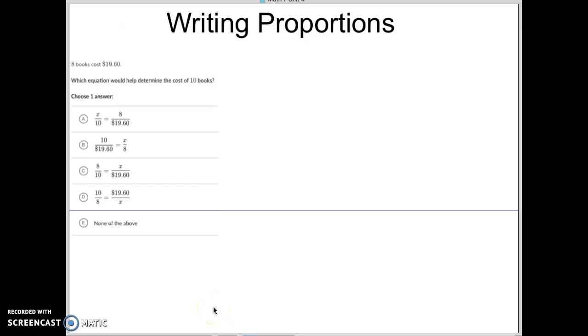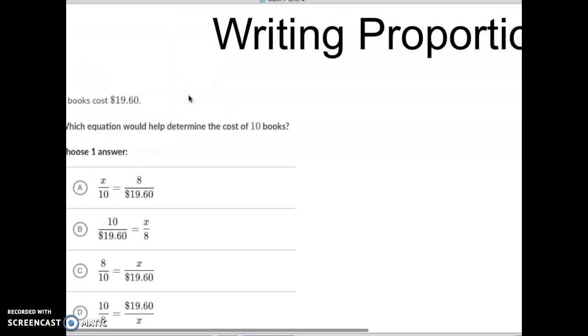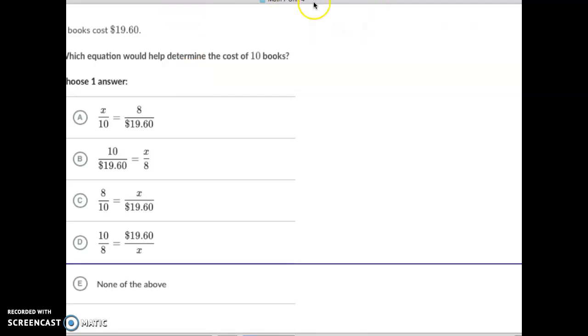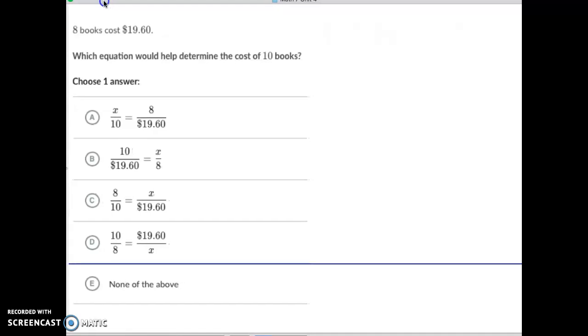Hey, Math 7 students. Today we are doing the con called Writing Proportions. This looks really small, so I'm going to zoom in. Give me a moment. Let's go to 200%. Boom! That makes it much bigger, much easier to read. Except that I'm not centered. Give me another moment. There we go. Now it's on the screen for you. It's perfect.